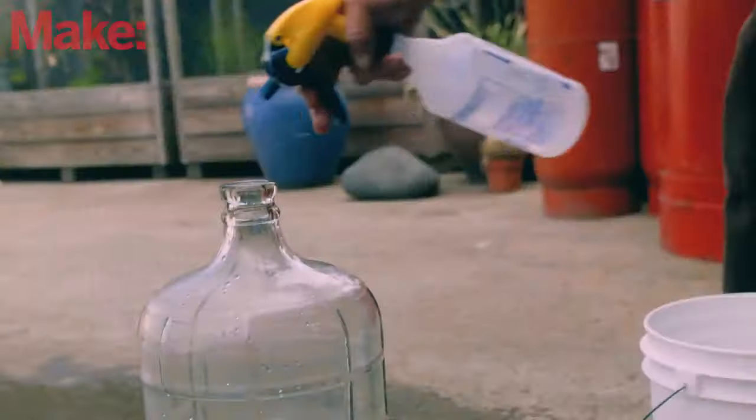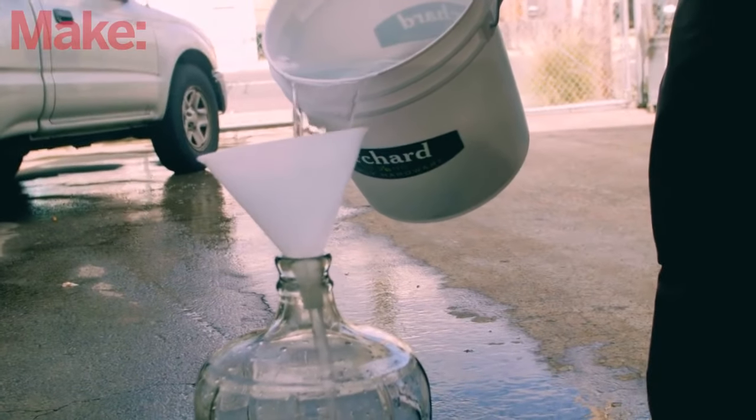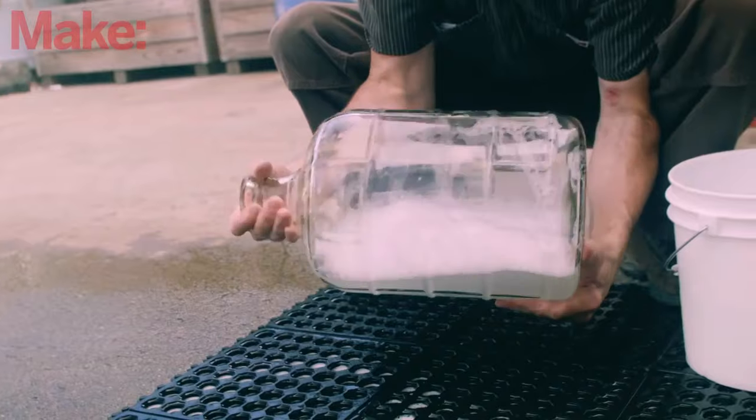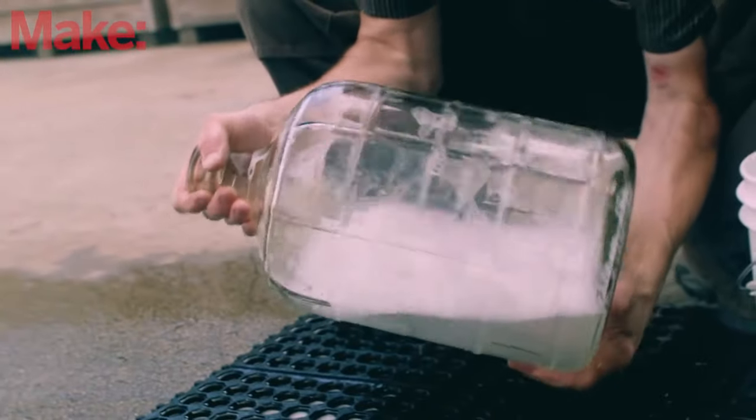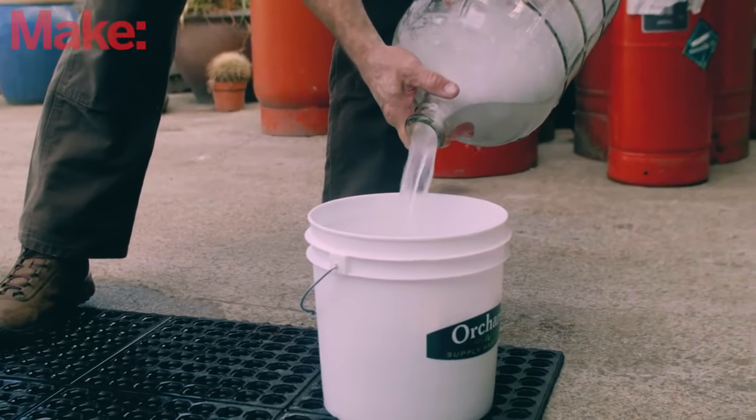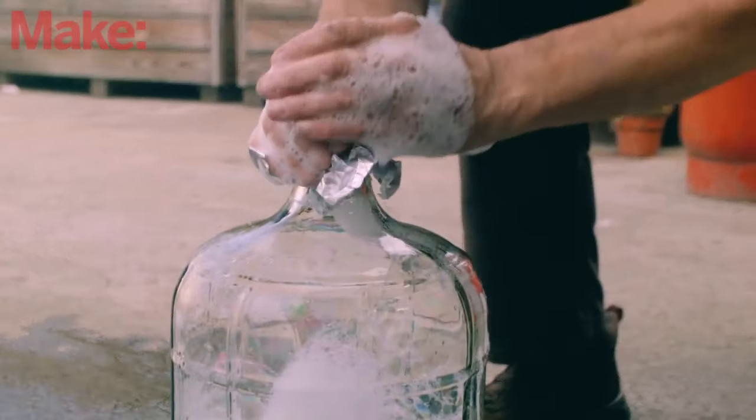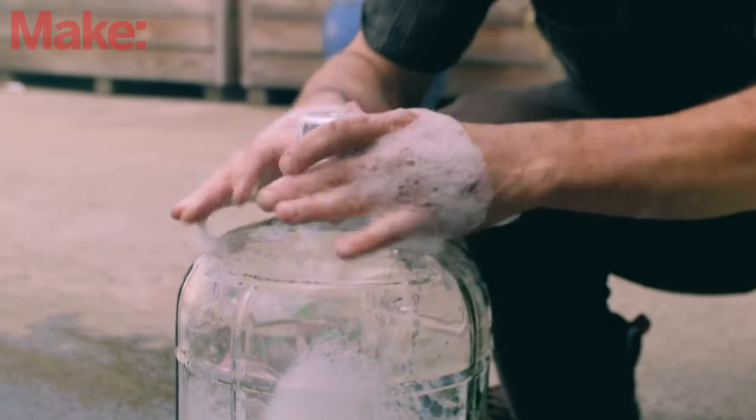Pour 16 ounces of this solution into the spray bottle for spot sanitations. Then pour about half of what's left into the carboy using a funnel. Roll the star san solution around the inside of the fermenter to wet the entire surface. Then drain it into the bucket for reuse. Rinse a piece of aluminum foil with the star san solution and close it over the mouth of the carboy to keep out contamination until you're ready to brew.